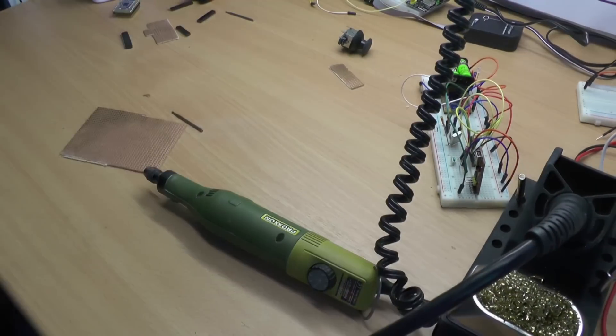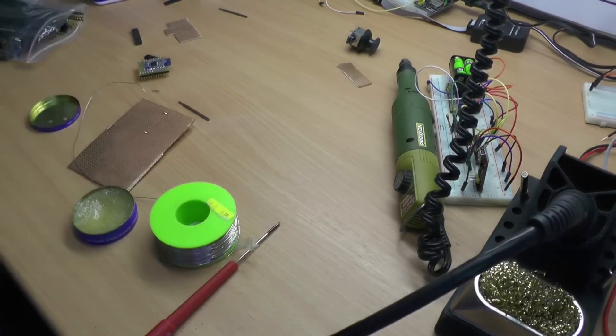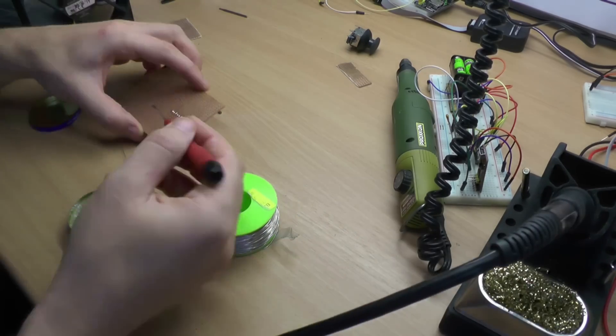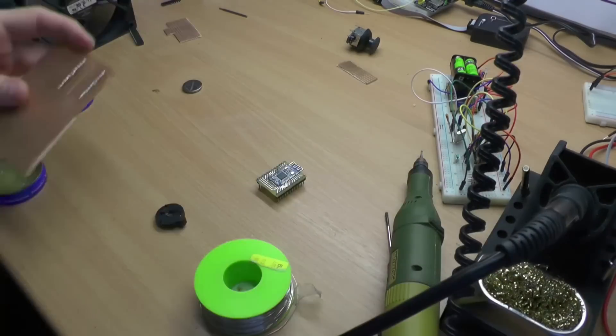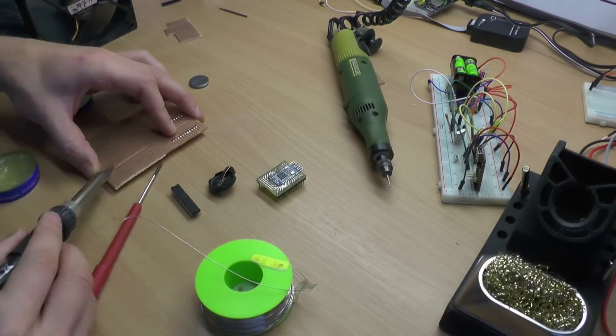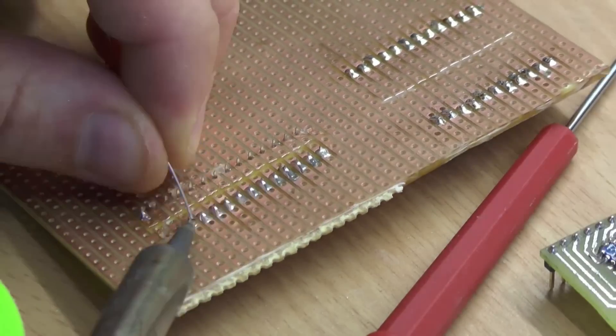Next step was to build a remote. In contrast to the key fob I wanted to keep the remote simple and show you that it's not mandatory to use some etching. As mentioned before I want to have the possibility to add some stuff for later projects.